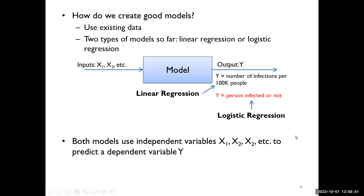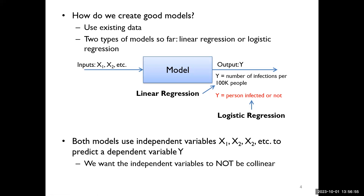Both of these models — whether linear or logistic — use independent variables X1, X2, X3, etc., to predict a dependent variable Y. We want these X variables to be not collinear, so we want them to be independent. We want to avoid collinearity — nice, clean variables that do not have any relation among themselves. Once we've decided whether we're building a linear regression or logistic regression model, the way we create good models is very similar.